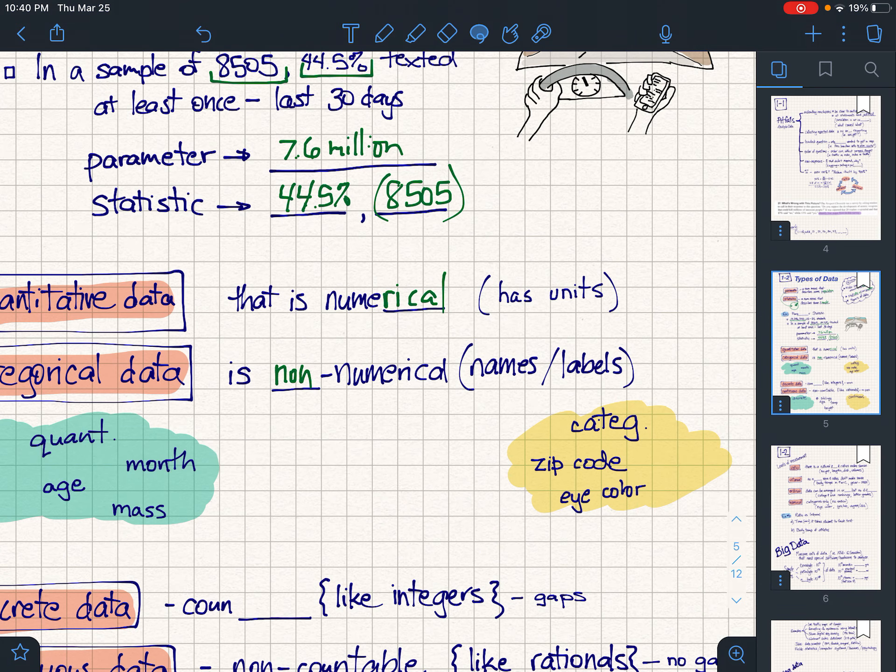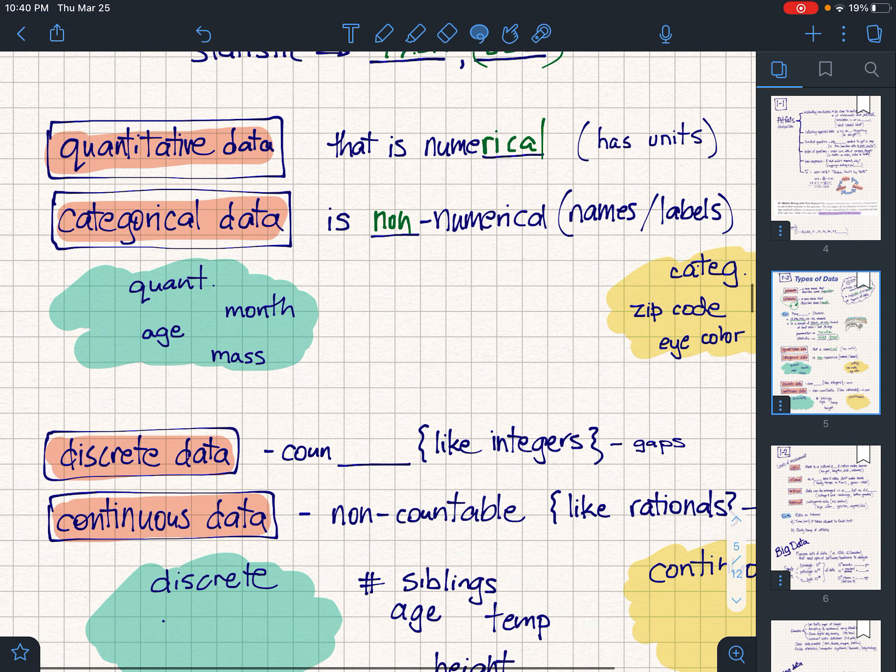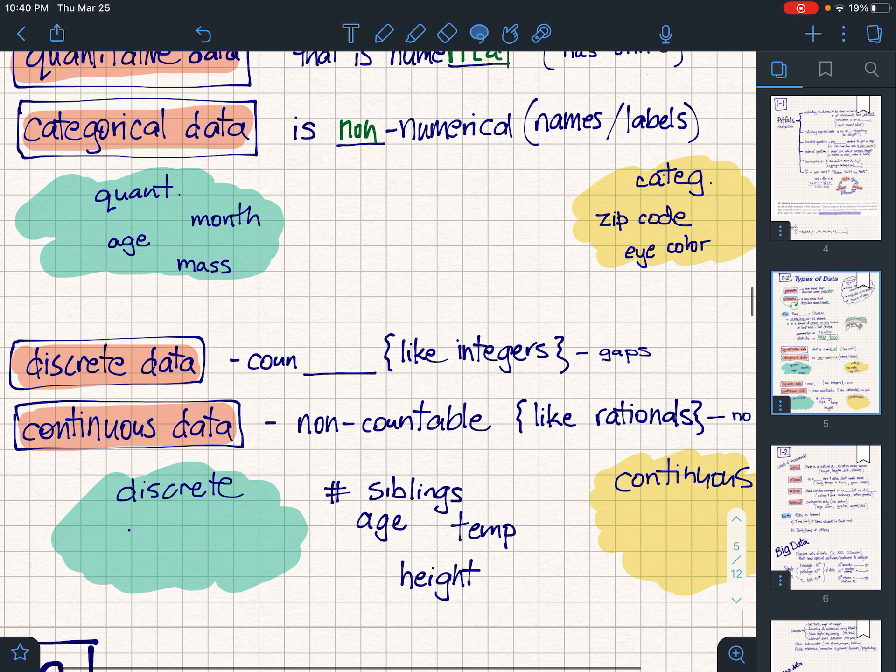Discrete and continuous. Hopefully you've seen this term before. I feel like I'm whispering—this is like an ASMR video or something—but everybody else is asleep in this house and so I'm trying not to wake people up. Sorry about that. Discrete data is countable data.